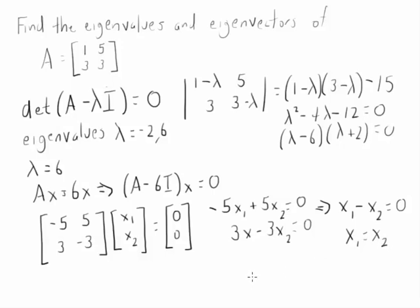Every time you go through this process, you should be able to say what some variables are in terms of another. You'll never say X1 equals 3 and X2 equals 7. What's our eigenvector? We know we have to have something along the form of X2, X2.